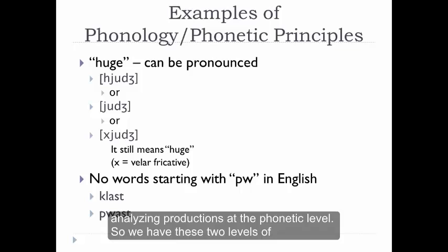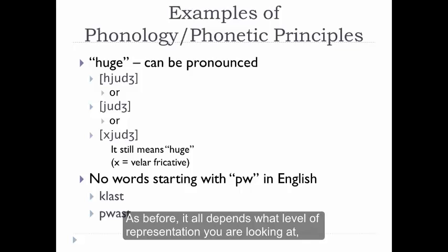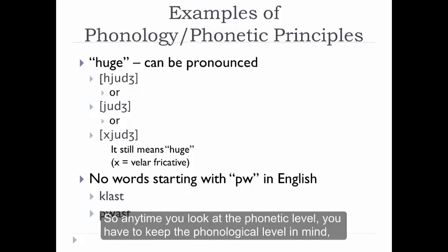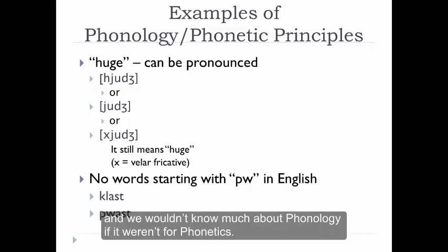So we have these two levels of representation — phonetic and phonological — that relate to each other. Which one is more important? Neither, and both. It all depends on what level of representation you're looking at, though it's important to remember that the two levels will always relate to each other. Any time you look at the phonetic level, you have to keep the phonological level in mind, and vice versa. Phonetics doesn't exist without phonology, and we wouldn't know much about phonology if it weren't for phonetics.